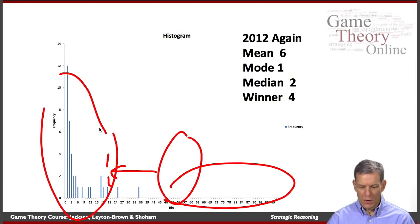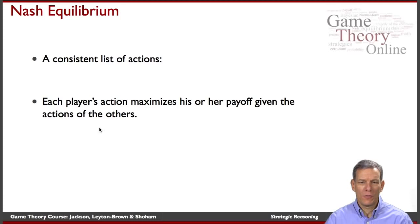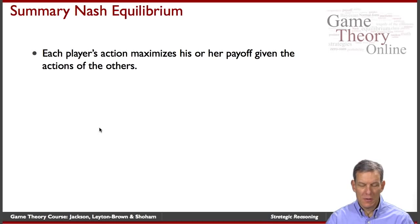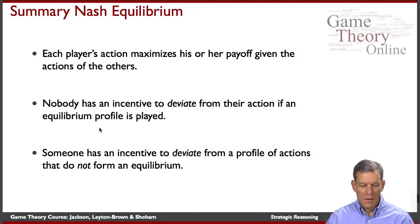Nash Equilibrium: the basic ideas. A consistent list of actions where each player is maximizing his or her payoffs given the actions of the other players — it should be self-consistent and stable. Each player's action is maximizing what they can get given the other players. Nobody has an incentive to deviate from their action if an equilibrium profile is played. Someone does have an incentive to deviate from a profile of actions that does not form an equilibrium.